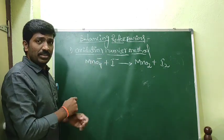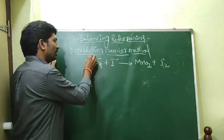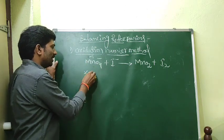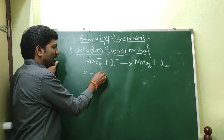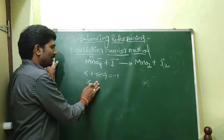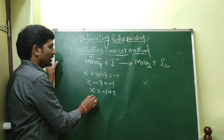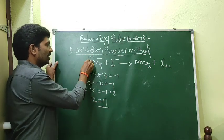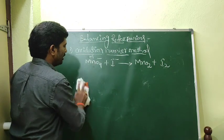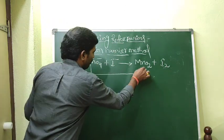The oxidation numbers are already indicated in the equation. For MnO4⁻, let the oxidation number of Mn be X. There are 4 oxygens, each with −2, so 4 × (−2) = −8. So X + (−8) = −1, which gives X = −1 + 8 = +7. The oxidation number of Mn in MnO4⁻ is +7.